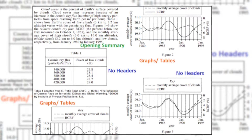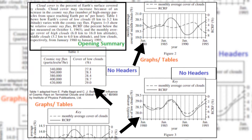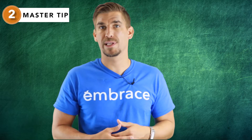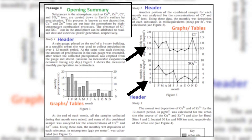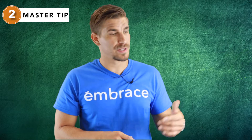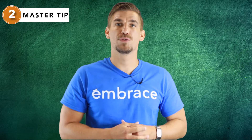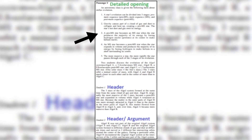Data representation passages contain collective pieces of data in a beginning summary, tables, charts, and graphs, and there are no headers to categorize experiments. Research summaries passages contain descriptions of one or more related experiments — they also have a short beginning summary, tables, charts, and graphs, but do contain headers to categorize experiments such as Experiment 1, Study 2, etc. Conflicting viewpoints passages represent several hypotheses or arguments that are inconsistent with one another. They are usually very wordy and do not contain many tables or diagrams, if at all.